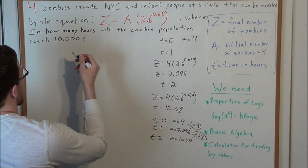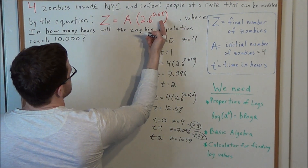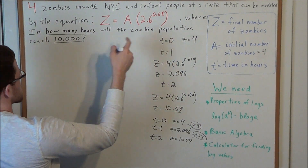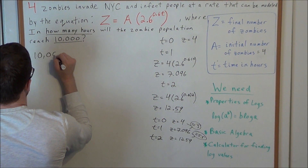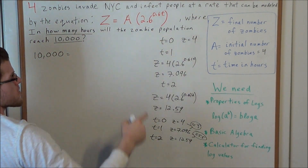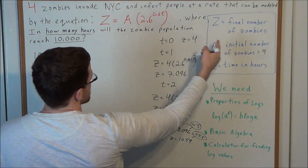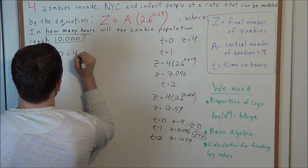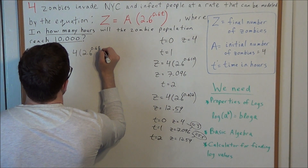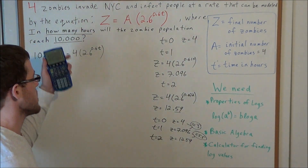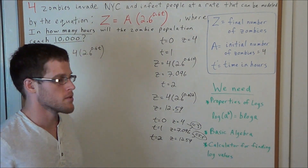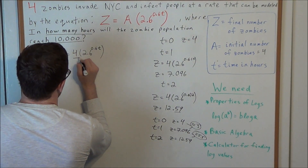Now we're solving for T: in how many hours will the zombie population reach 10,000? We know z equals a times 2.6 to the 0.6T, and a is always 4 — the initial number of zombies. We're looking for the variable T. In algebra, to solve for a variable in the exponent, we need logarithms. But before taking the log of both sides, let's simplify as much as we can first.